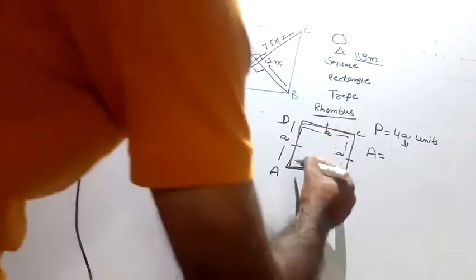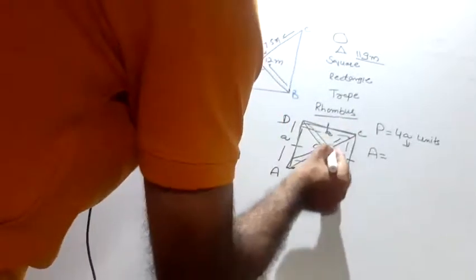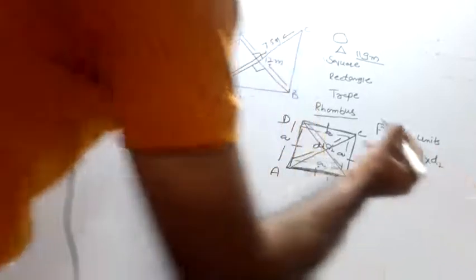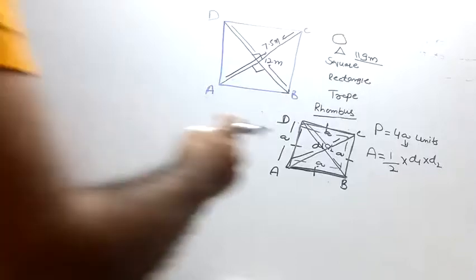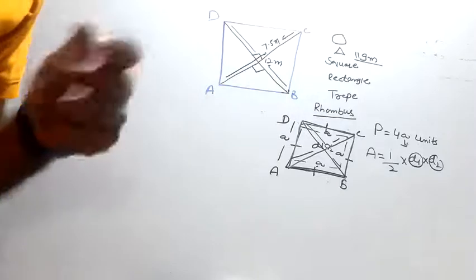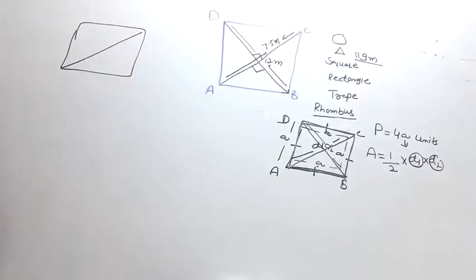Area of rhombus - if AC is one diagonal and BD is another diagonal, if diagonal first is d1 and diagonal second is d2, then area is equal to half into d1 into d2. Given d1 and d2, the product of diagonals gives the area of rhombus. Keep in mind, if given a rhombus with diagonals.